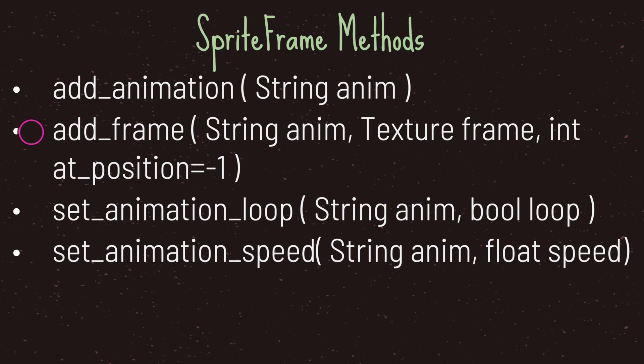The add_frame method takes two mandatory arguments. The first is the animation name you created through add_animation. The second argument is your texture frame, which is basically your image file. The third argument is the position you'd like your texture frame to be at — by default this is set to negative one, meaning it will be appended at the end of the array for that animation.